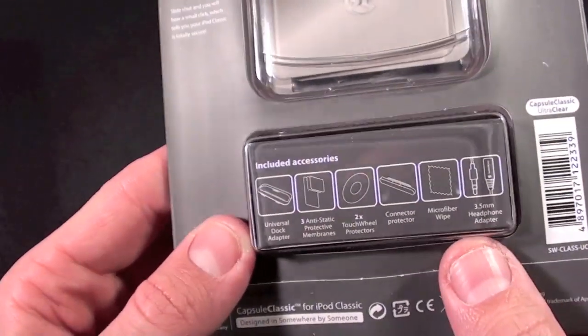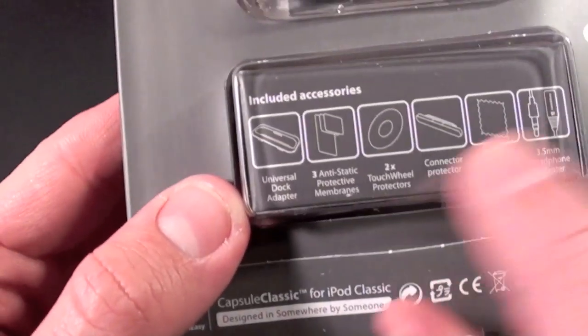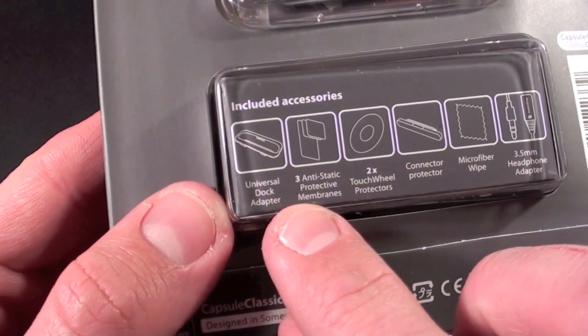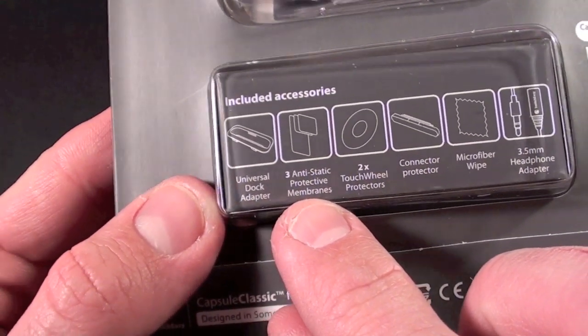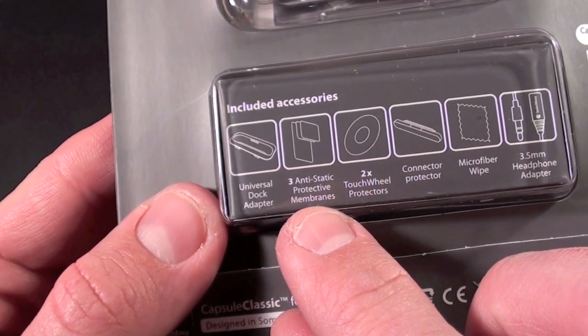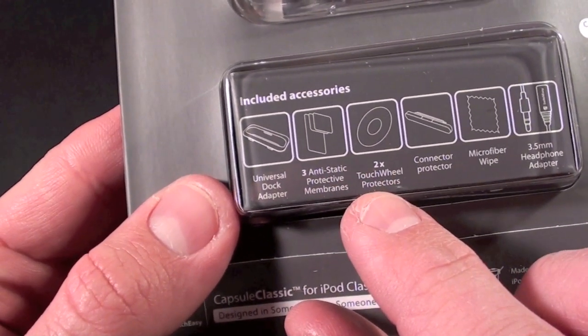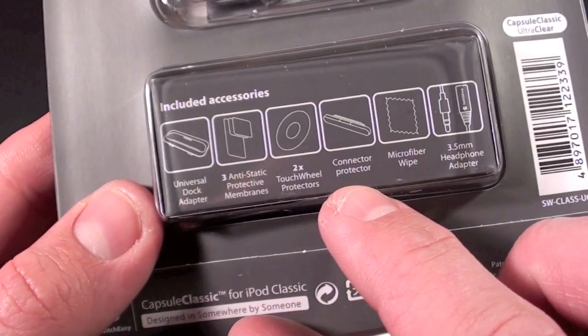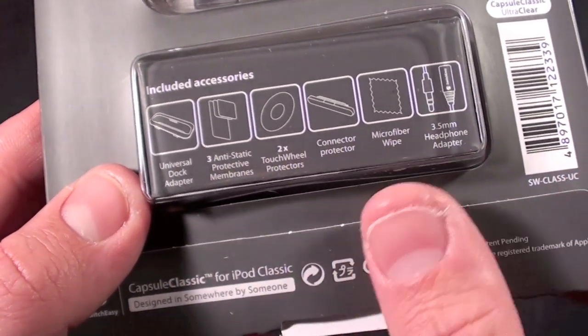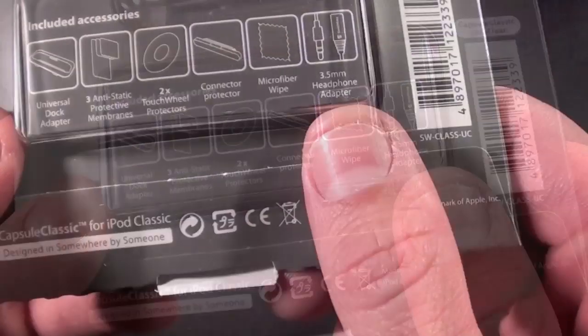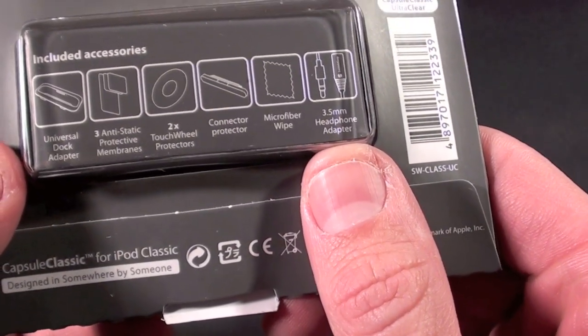Here we have the accessory box. So inside you get some dock adapters which fit the case, two or actually three anti-static protective membranes, so two for the screen, one for the back. We also have two for the touch wheel, a dock connector protector, a microfiber wipe, and a 3.5 millimeter headphone adapter.